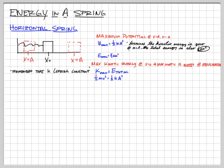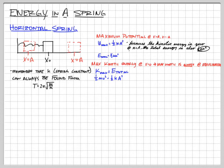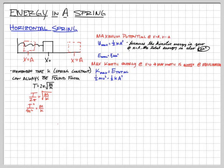Remember that the spring constant — we can always find it from the period. The period for a spring equals 2π√(m/k). Solving for k: divide both sides, then square both sides so T/(2π) becomes T²/(4π²) = m/k. Cross-multiplying to get k on top gives us k = 4π²m/T².